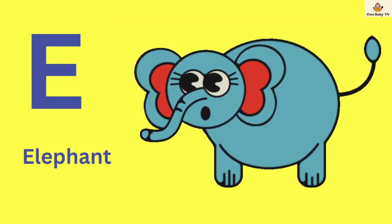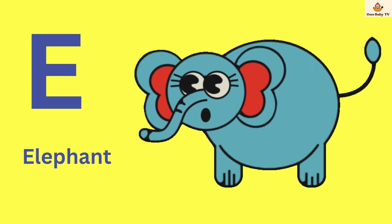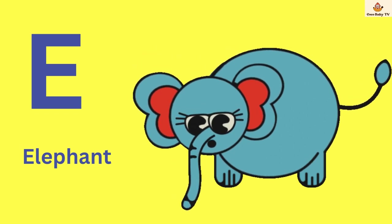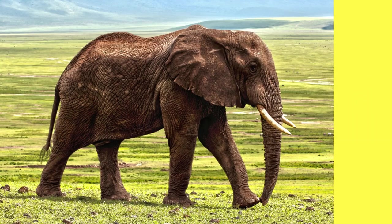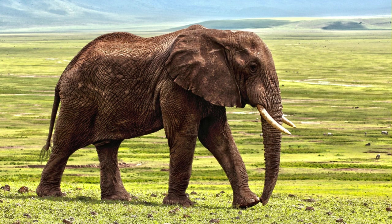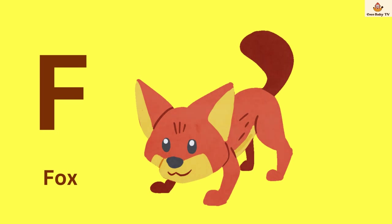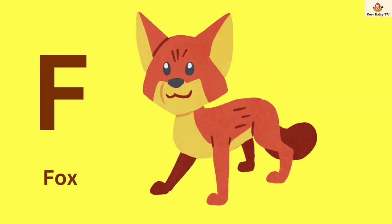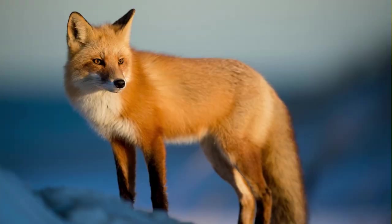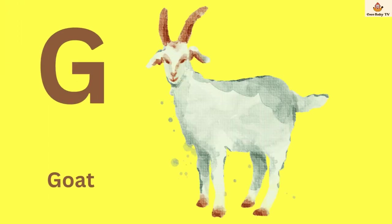E. E is for elephant. F. F is for fox. G. G is for goat.